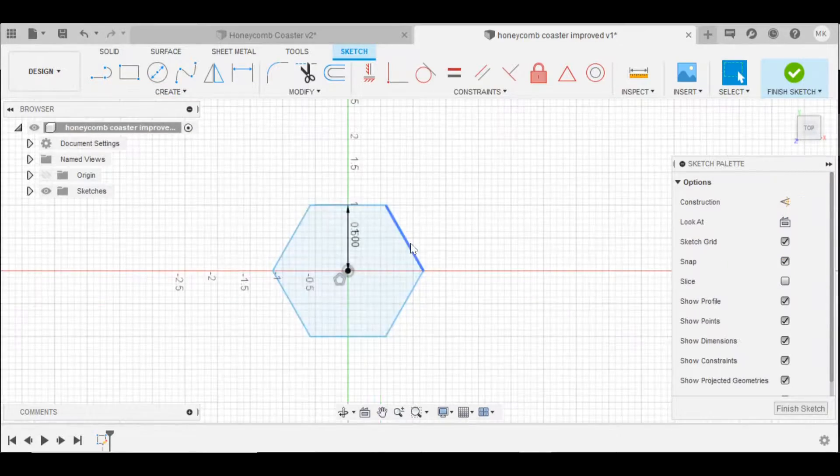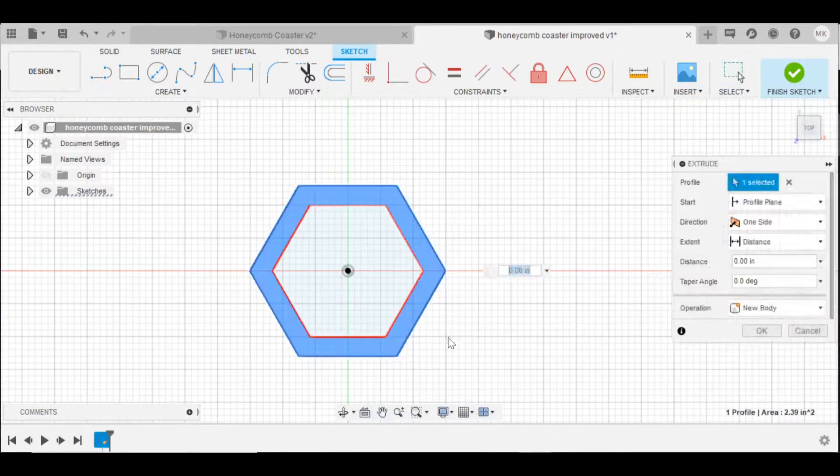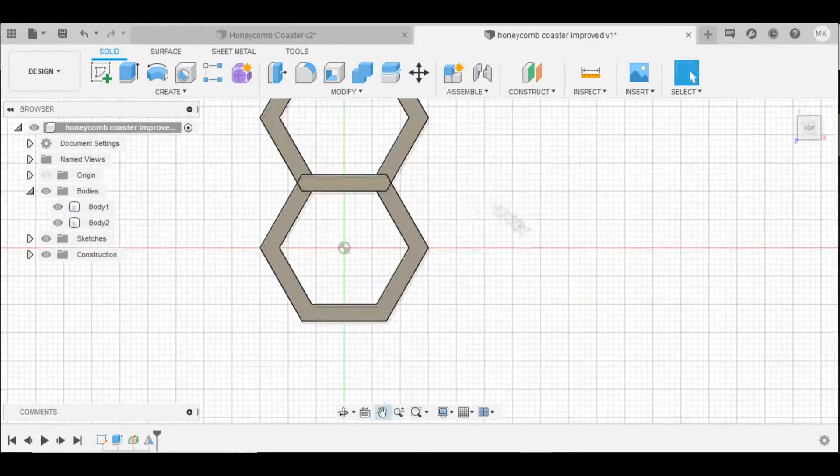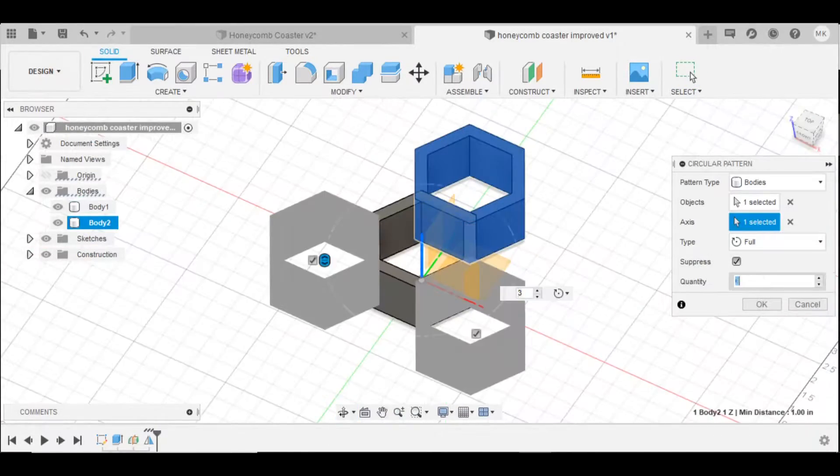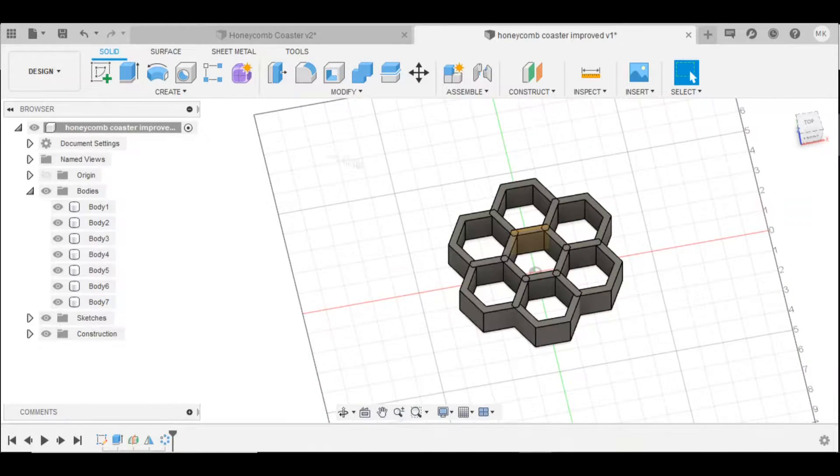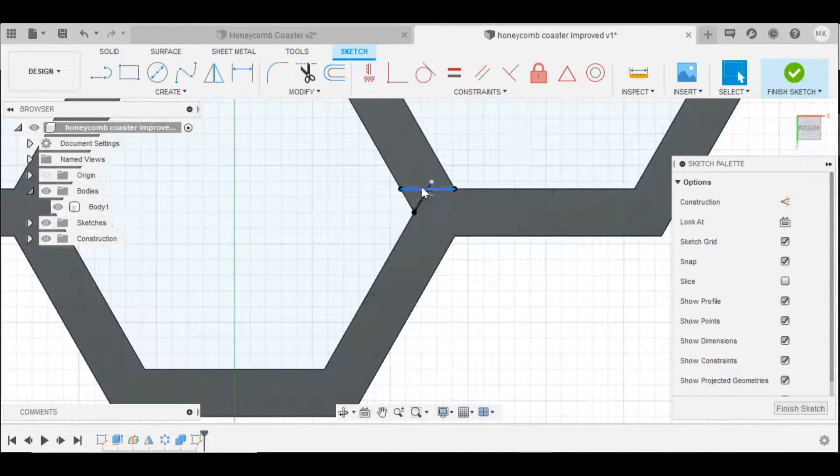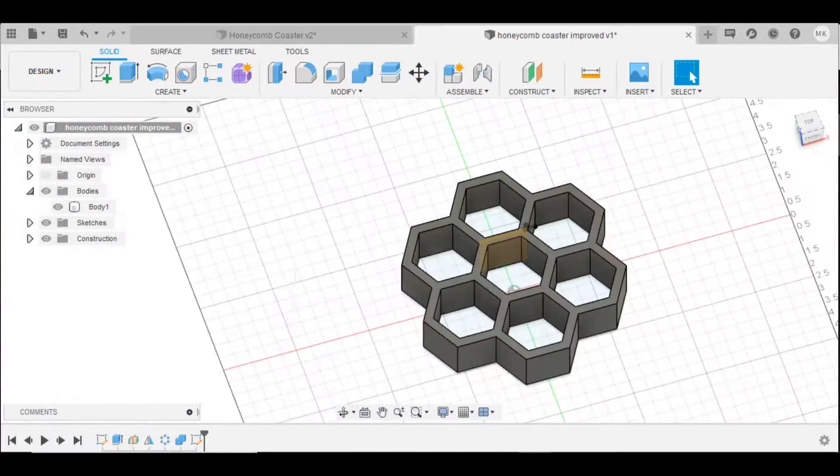I designed the coasters in Fusion 360 and started by creating one honeycomb unit. I wasn't worried about the absolute size at this point as I would just scale everything later on. I used a combination of the mirror, pattern, and copy tools to turn the single unit into the full honeycomb shape.